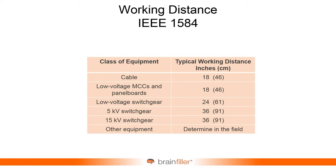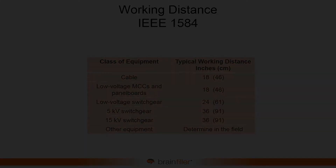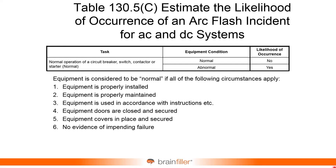If you're trying to evaluate the likelihood of an arc flash, you go to Table 130.5(C). There are many line items in the table, and you look up the task to be performed — for example, normal operation of a circuit breaker, switch, contactor, or starter. Basically, you're going to operate a device. Then you determine whether the condition of the equipment is normal or abnormal. If the equipment condition is normal, there's a very limited likelihood of occurrence.